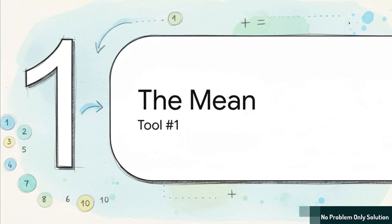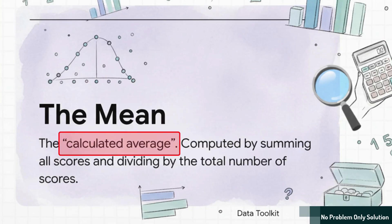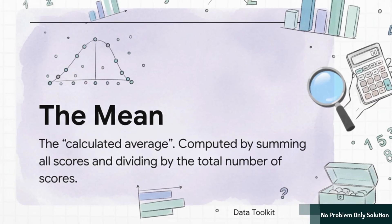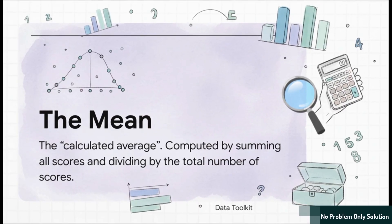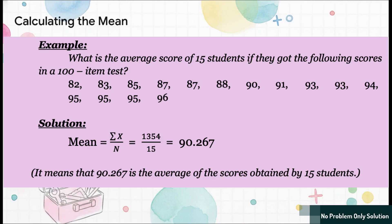So, The Mean, its nickname is the calculated average. And that's for a super simple reason. It's because that's literally what we do with it. We calculate it. And what's really cool about The Mean is that it uses every single piece of data in our set. Nothing gets left behind. Okay, so how do we actually do this? It's a super simple two-step process.